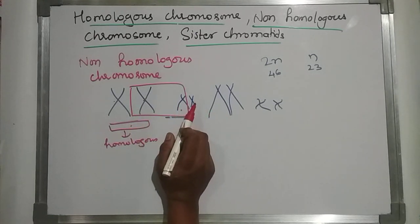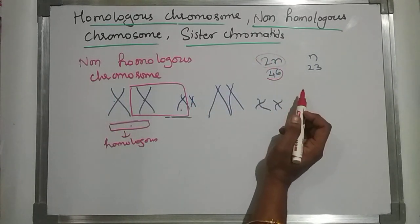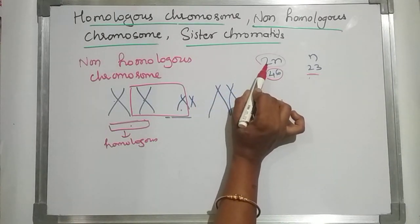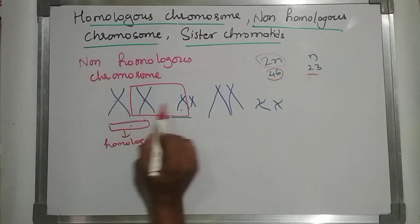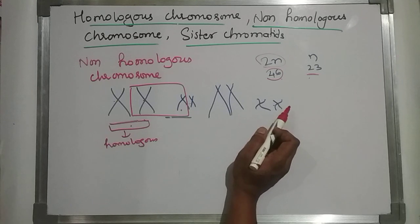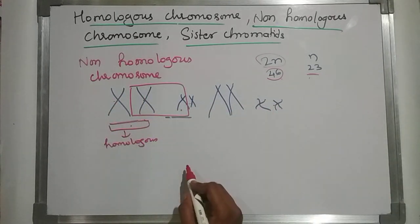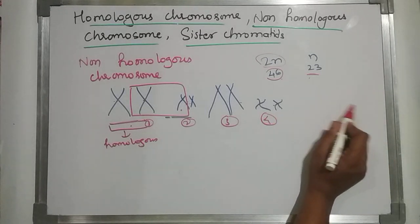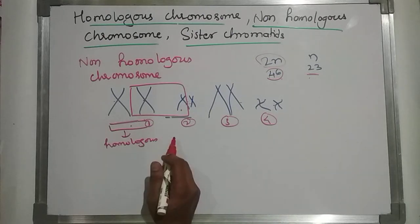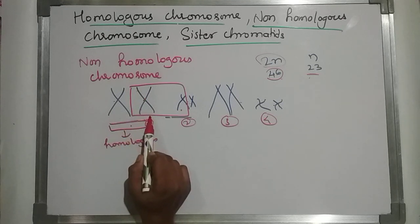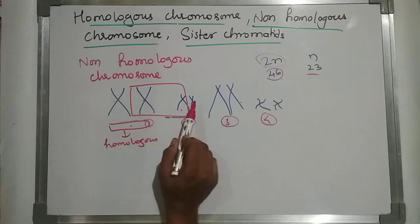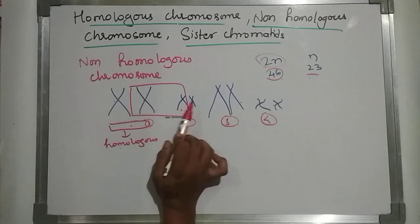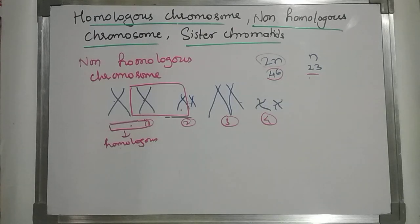In a human karyotype, in a diploid cell 46 chromosomes are there; in a haploid cell, 23. There are 23 pairs — 23 pairs means 46 chromosomes. I've shown four chromosome pairs here: first pair, second pair, third pair, fourth pair — like that 23 pairs will be there constituting the 46 chromosomes. Non-homologous chromosomes from different pairs will not look the same; their gene positions will be different.